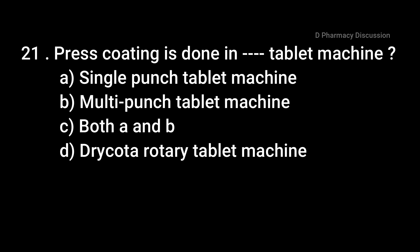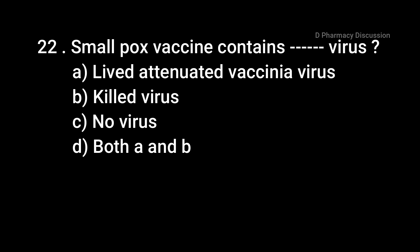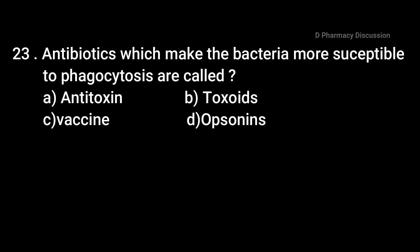Question 21: Press coating is done in a dash tablet machine. Option A: single punch tablet machine, B: multi punch tablet machine, C: both A and B, and Option D: Tricota rotary tablet machine. Correct answer is Option D, the Tricota rotary tablet machine. Question 22: Smallpox vaccine contains dash virus. Option A: live attenuated vaccinia virus, B: killed virus, C: no virus, and Option D: both A and B. Correct answer is Option A, the live attenuated vaccinia virus.